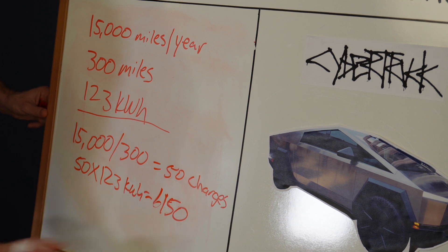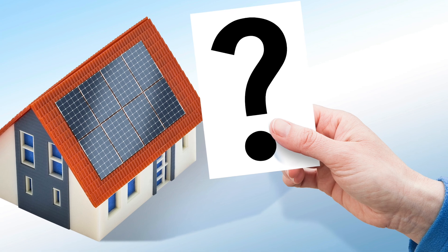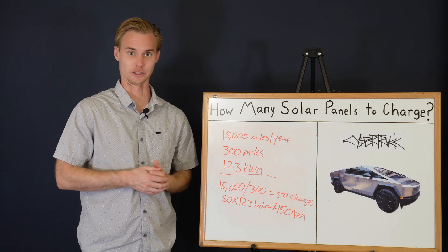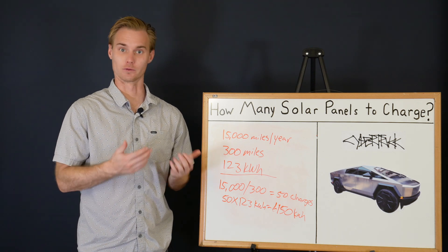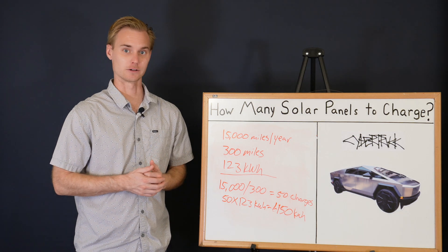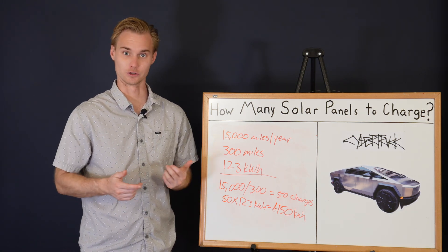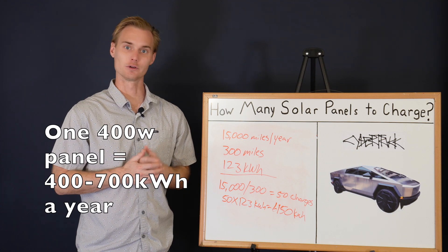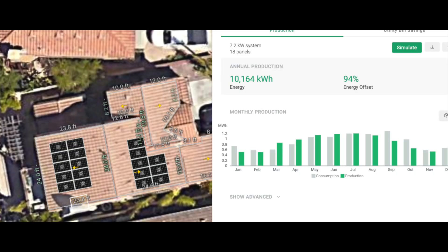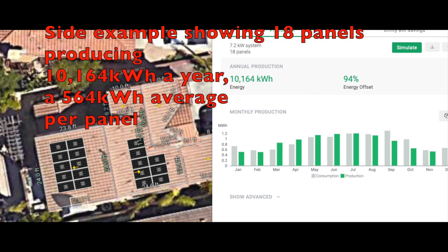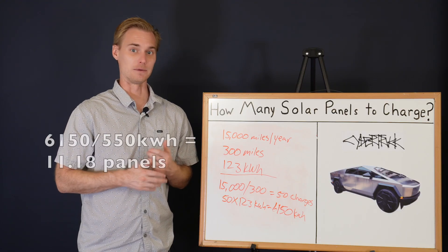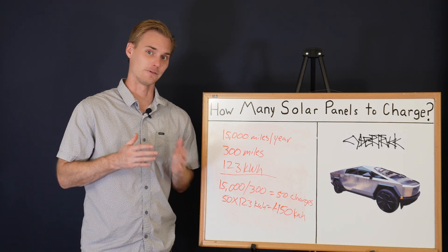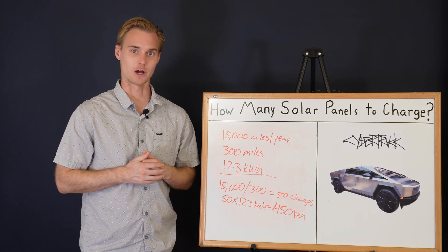6,150 kilowatt hours - so how many solar panels is it going to take to produce that in a year? That of course is going to differ depending upon your situation, where you live, the shading, the azimuth which is the direction of the roof, the pitch itself - there's multiple different factors that will ultimately affect how many kilowatt hours you're going to produce. But a rule of thumb you can go off of is one solar panel in a year should produce somewhere in the range of 400 to 700 kilowatt hours. If we just assume that 550 is the average, that means you're going to need approximately 11 or maybe potentially 12 panels to produce the 6,150 kilowatt hours for the year. But that's not the full story. It's not just a matter of throwing 11 panels up there.